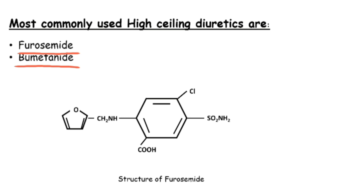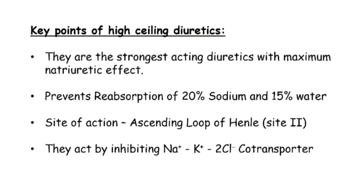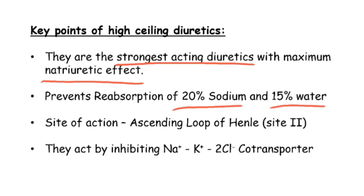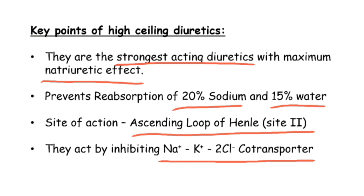This is the chemical structure of furosemide. Now let us focus on the key points of high ceiling diuretics. First, they are the strongest acting diuretics with maximum natriuretic effect. Natriuretic effect is an effect in which the compounds excrete sodium via urine. Second, they prevent reabsorption of 20% sodium and 15% water. Third, the site of action is the ascending loop of Henle, which is site 2. And last, they act by inhibiting the sodium, potassium, and chlorine co-transporter.